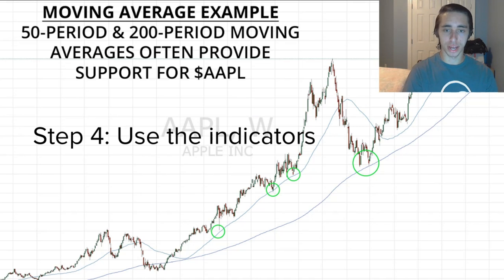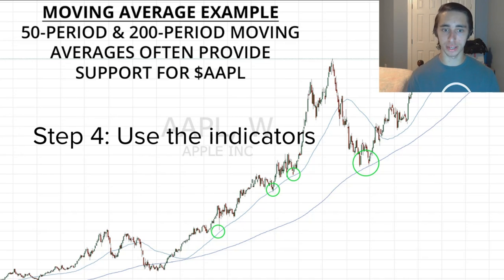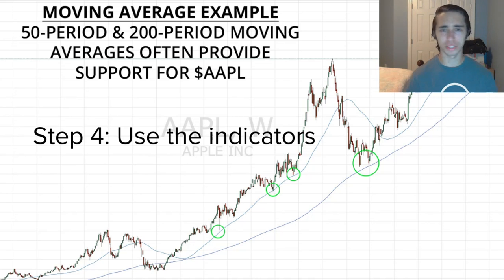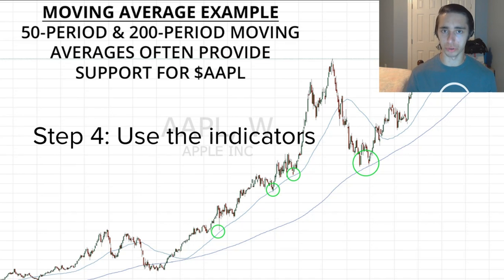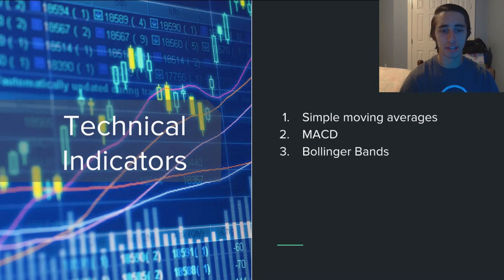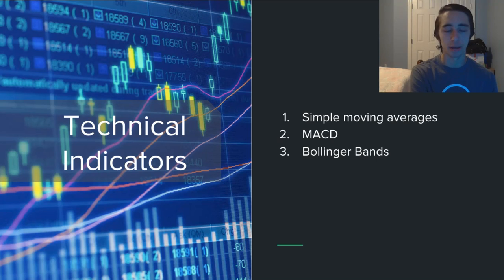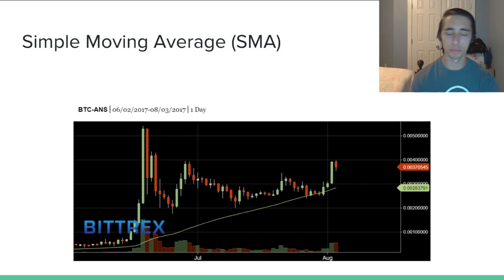Step four: using the indicators. I'm showing an Apple stock chart, but everything applies the same to cryptocurrencies. The three indicators I'm covering are: the Simple Moving Average, the MACD, and the Bollinger Bands. These basic indicators, which people use in traditional markets, can give you a massive advantage in crypto since many basic investors here don't even use them.